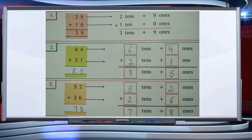Second question: add 64 and 21. We write 64 as six tens and four ones, and 21 as two tens and one one. Add the ones first: four plus one equals five. Then add the tens: six plus two equals eight, giving eight tens and five ones. So 64 plus 21 equals eighty-five.